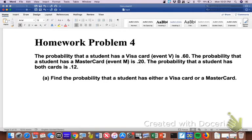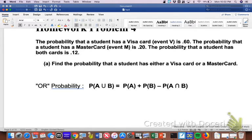Here we go with problem number four. So we are looking for the probability that a student has either a Visa or a MasterCard. So the probability for OR, so OR probability is different from AND.